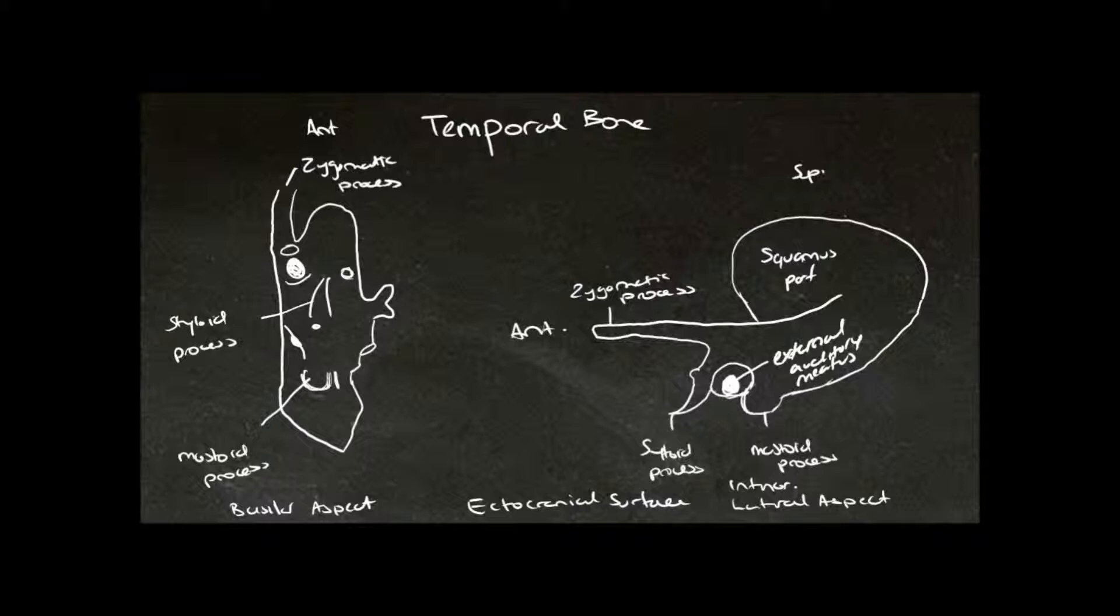We'll have a look at some features on the basal aspect of the temporal bone, which will help us to identify that it is in fact the temporal bone and which surface we are looking at, whether it be the internal or the external surface. Here we have the articular tubercle in front of the mandibular fossa. The mandibular fossa is for the articulation of the mandible with the temporal bone, so the condyle of the mandible sits in here.